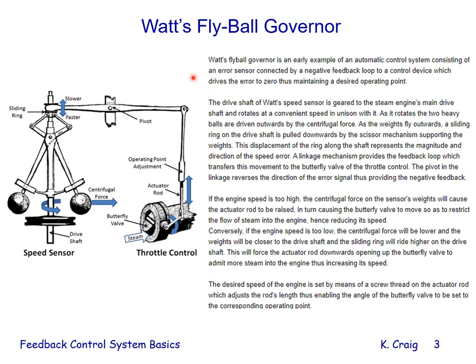All feedback control systems have negative feedback. The drive shaft of Watt's speed sensor is geared to the steam engine's main drive shaft and rotates in unison with it. As it rotates, the two heavy balls are driven outward by centrifugal force. As the weights fly outward, a sliding ring on the drive shaft is pulled downward by the scissor mechanism. This displacement represents the magnitude and direction of the speed error. A linkage mechanism provides the feedback loop, transferring this movement to the butterfly valve of the throttle control. The pivot in the linkage reverses the direction of the error signal, providing negative feedback.